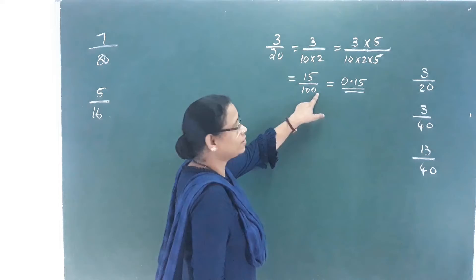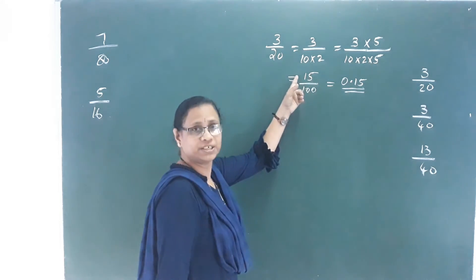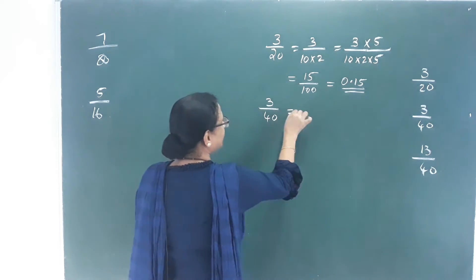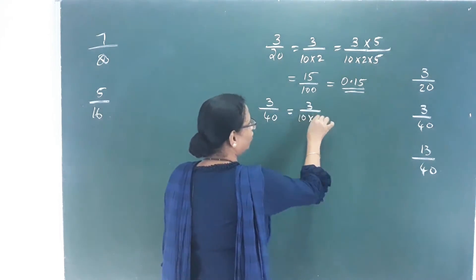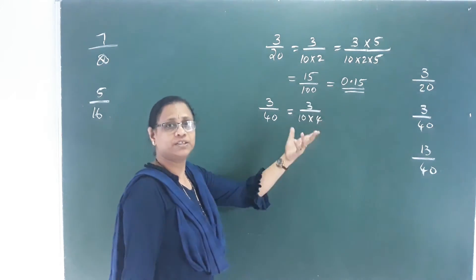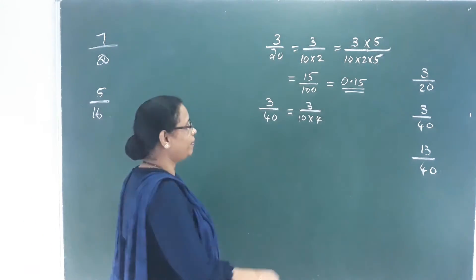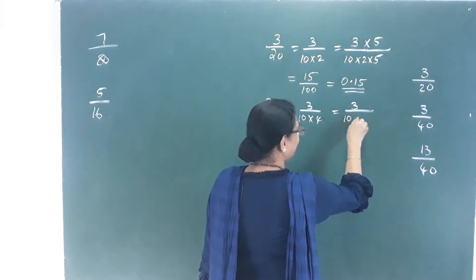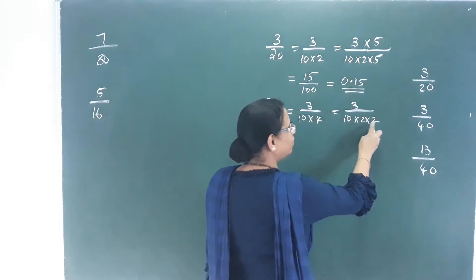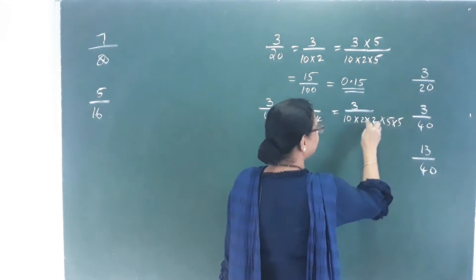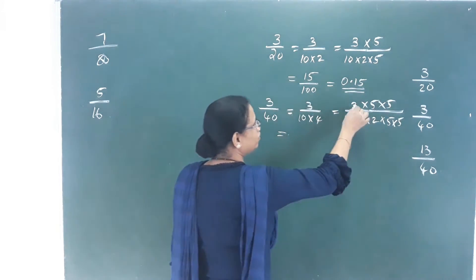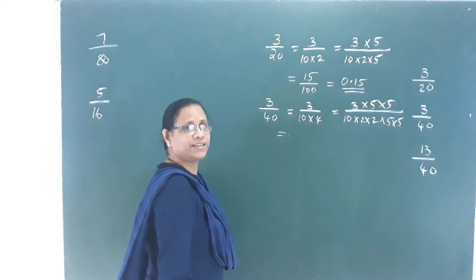15 by 100 equals 0.15. That is the decimal. Next question: 3 by 40. That is 3 by 10 into 4, and 10 into 4 means 2 into 2. Then we get 75.